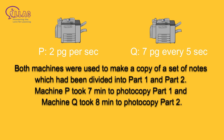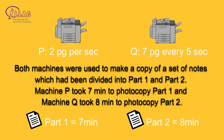Both machines were used to make a copy of a set of notes which had been divided into part 1 and part 2. Machine P took 7 minutes to photocopy part 1, and Machine Q took 8 minutes to photocopy part 2.